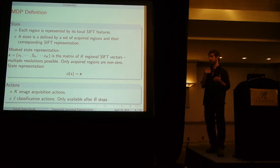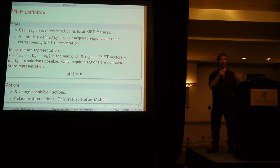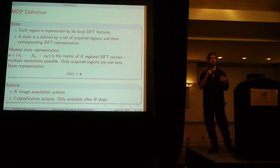Our available actions are k image acquisition actions. If we have k regions, we start off with k possible image acquisition actions. As we acquire regions, we're going to decrease the number of image acquisition actions possible.